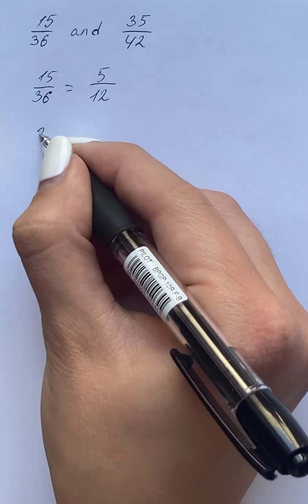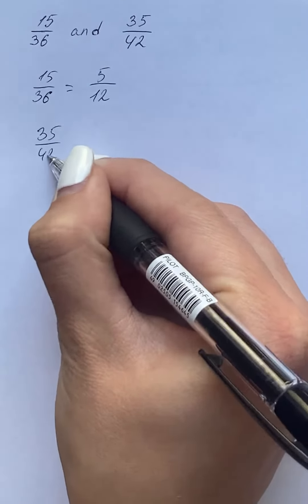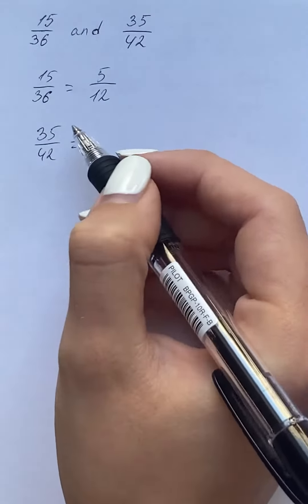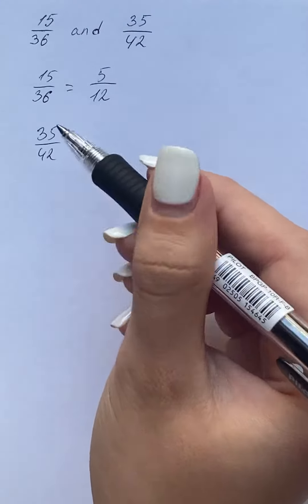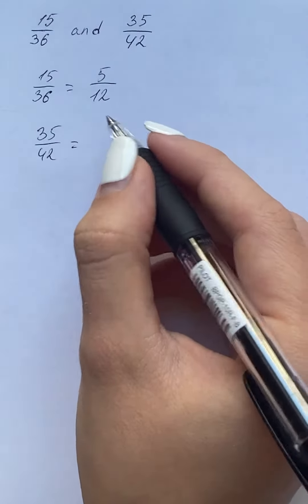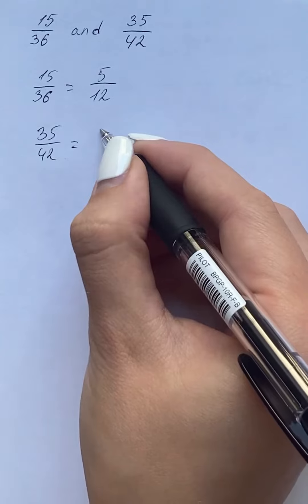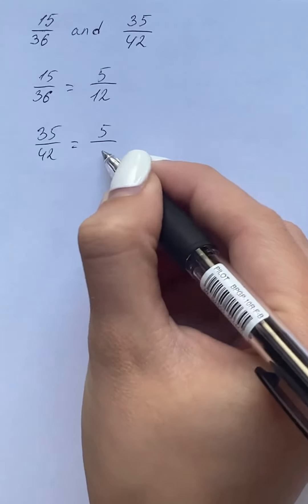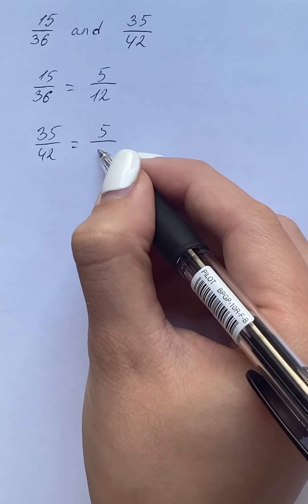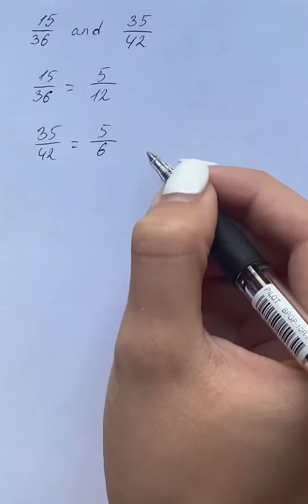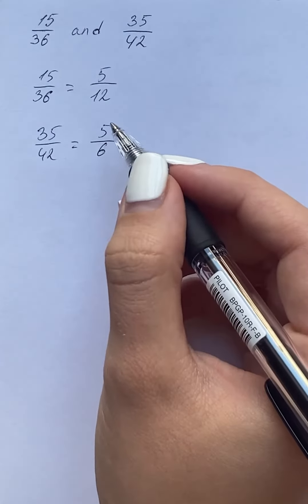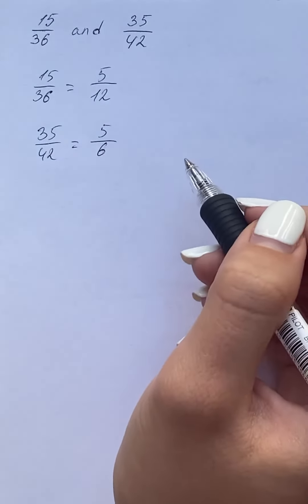The second fraction is 35 over 42. The highest common factor of numerator and denominator is 7, so we're also going to divide the numerator by 7 and get 5, and the denominator by 7 to get 6. This is the simplified form of the second fraction.